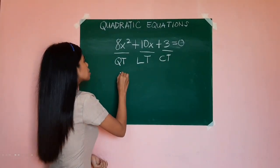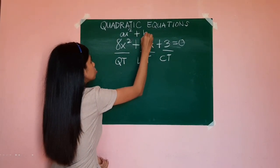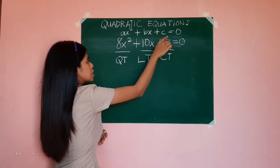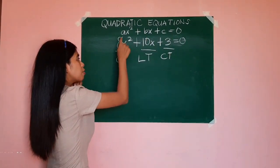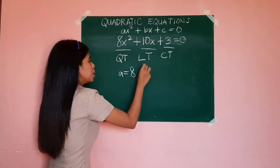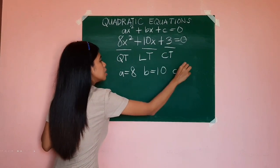We may also say, since the quadratic equation in standard form is ax² + bx + c = 0, we can say that the value of A would be 8, the value of B is 10, and the value of C is 3.